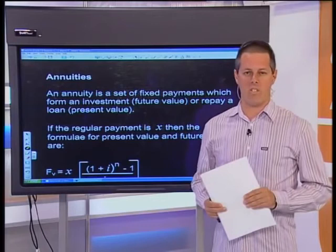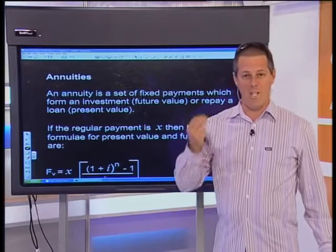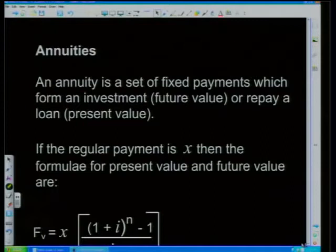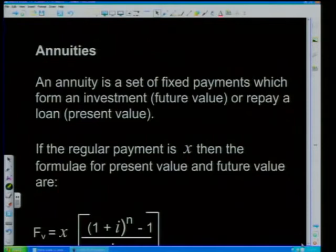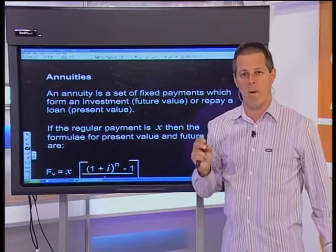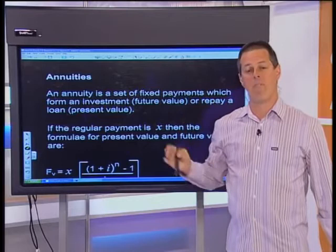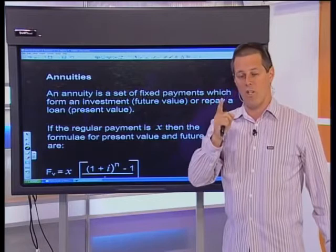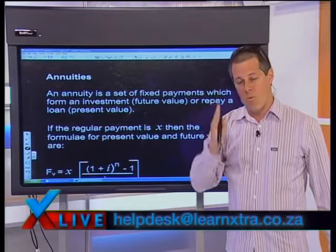Tonight we're talking about annuities, which is the bulk of the Grade 12 work. An annuity is a set of fixed payments which form an investment — either a future value investment or repay a loan as a present value. The key point is that an annuity requires the same amount at the same frequency all the time. If you pay R100 monthly it must be R100 every single month — varying amounts do not constitute an annuity.